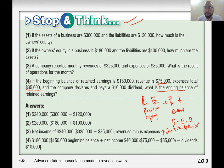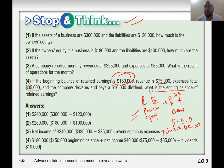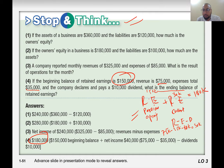Current year retained earnings is $30,000. The beginning balance from previous years is $150,000. So the total ending balance is $180,000 — that's why $180,000 is the answer.